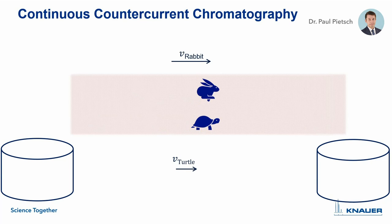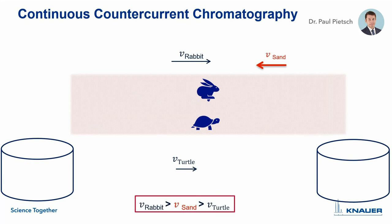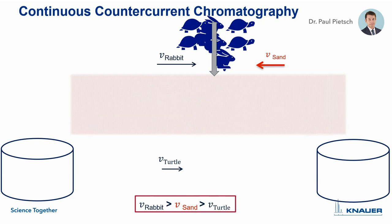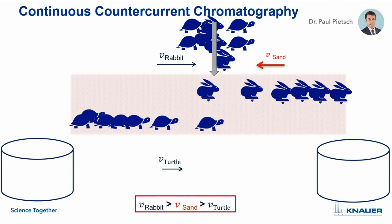The third case is that the movement of the sand is faster than the turtle but slower than the rabbit. With this result the animals will be separated — the turtle reaches the left-hand side and the rabbit reaches the right-hand side. Now if we continuously feed rabbits and turtles to the center of the sand, both can be separated continuously. This is the principle of continuous counter-current chromatography.